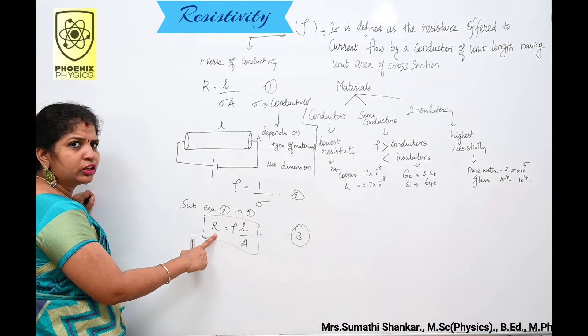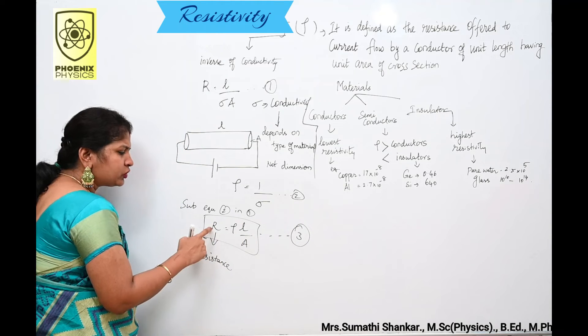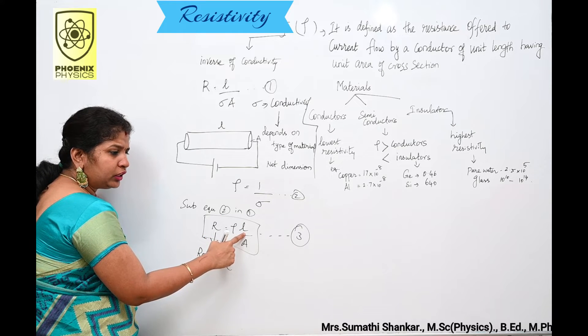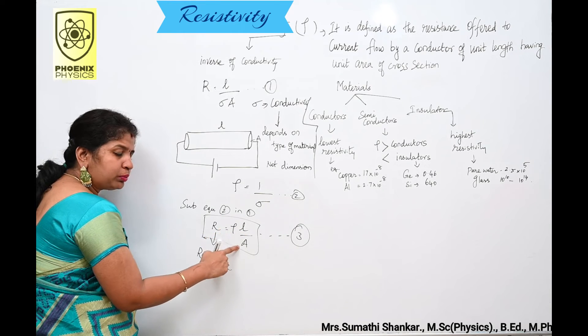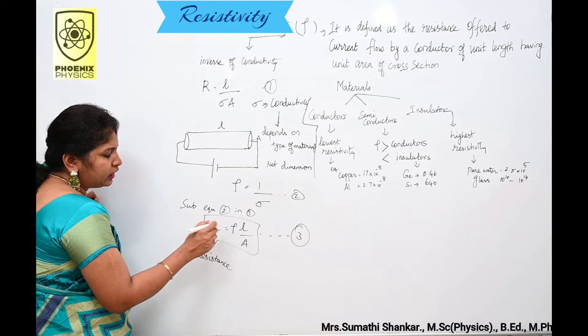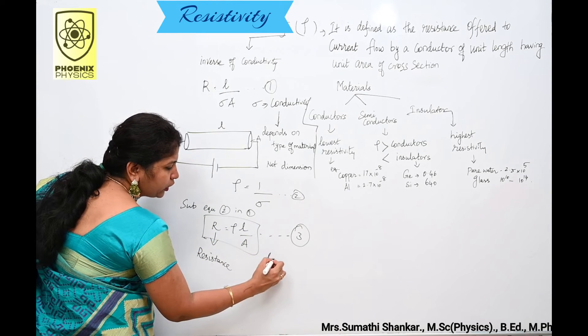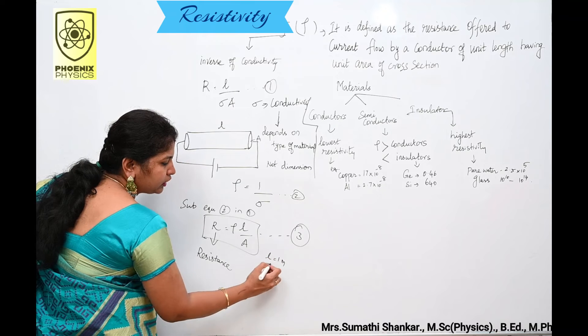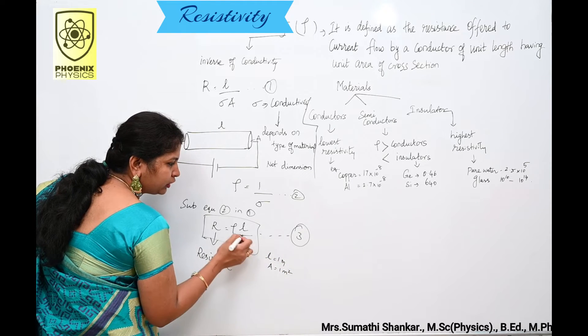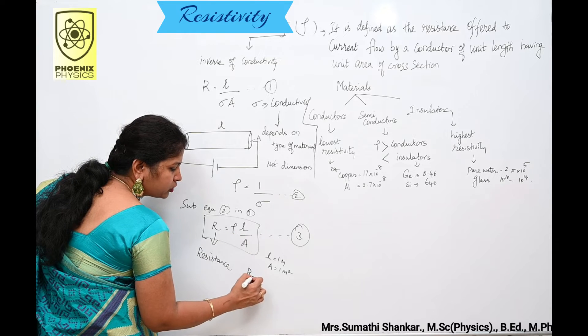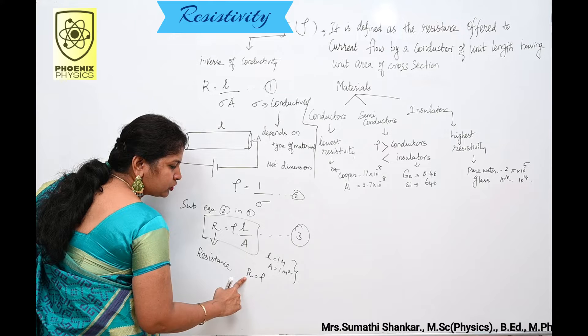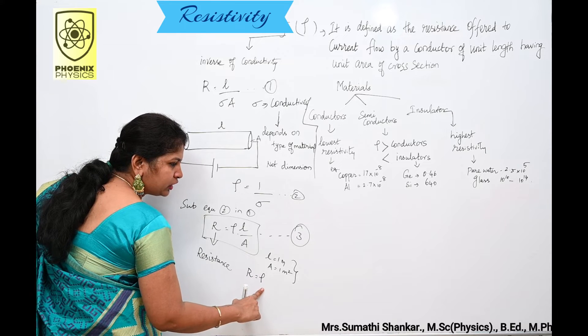From this equation, we can say the resistance of the material is directly proportional to the length of the material and inversely proportional to the cross sectional area. Here, suppose L is equal to 1 meter and A is equal to 1 meter square, substitute these two values in this equation 3. You can get R is equal to Rho. Under this condition, the resistance is equal to resistivity of the material.